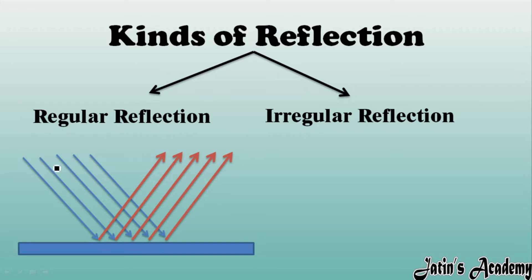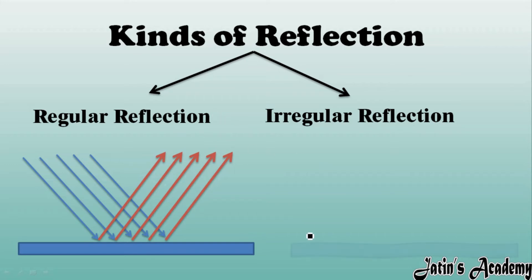The light which strikes on the plane mirror is called incident light or incident ray. When a beam of incident rays strikes parallelly on a plane mirror, that light will reflect back also in a parallel manner only. This kind of reflection is known as regular reflection.